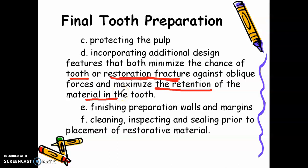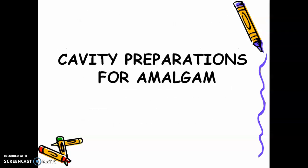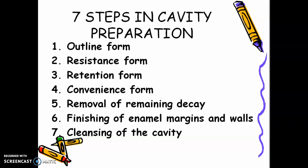Finishing preparation walls and margins. Cleaning, inspecting, and sealing prior to placement of the restorative material. Let's simplify the initial tooth preparation and the final tooth preparation into seven steps in cavity preparation or tooth preparation.